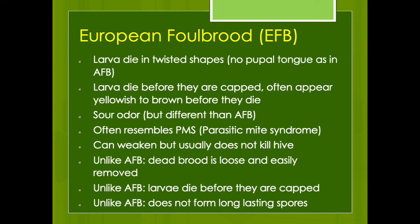The larvae first turn yellow and then brown in color, dying in twisted shapes before they're capped. It can have an odor, but it's not the really foul carrion smell you get from American foulbrood. It can sometimes overlap with or resemble parasitic mite syndrome. It can weaken the hive but rarely kills it — typically it reduces brood and population so the hive may not make much honey. The dead brood is loose and easily removed; it's not sticky and doesn't stretch when you poke it with a stick. Unlike American foulbrood, it does not form long-lasting spores.